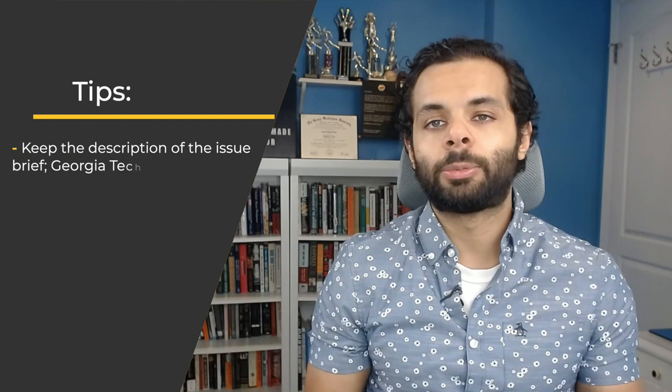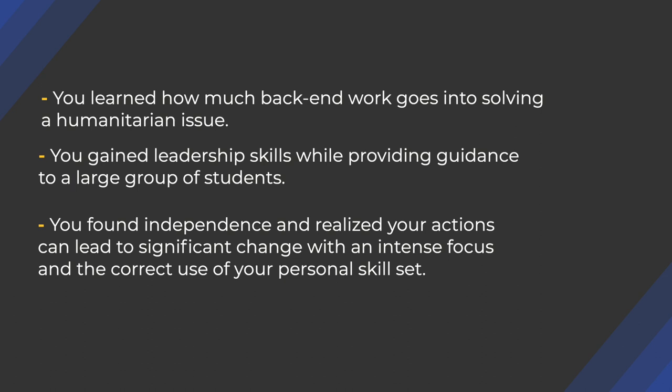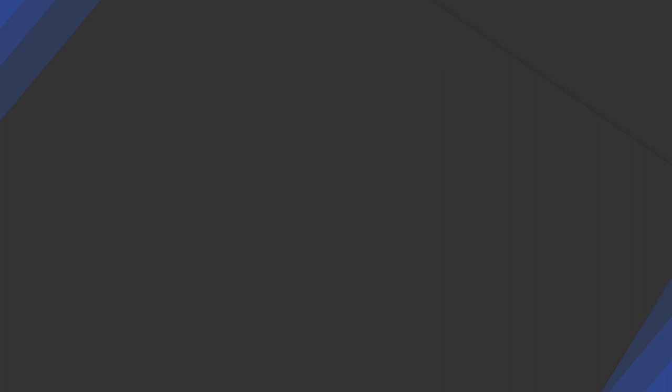Some tips for Prompt A: share a concrete plan if you're writing about a future problem you hope to solve. Be specific and show how your skills can make a positive difference. Keep the description of the issue brief — Georgia Tech wants to know how you can solve the problem more than they want to hear about it. Share what the experience taught you: leadership skills, independence, or the realization that your actions can lead to significant change with an intense focus and the correct use of your skill set.